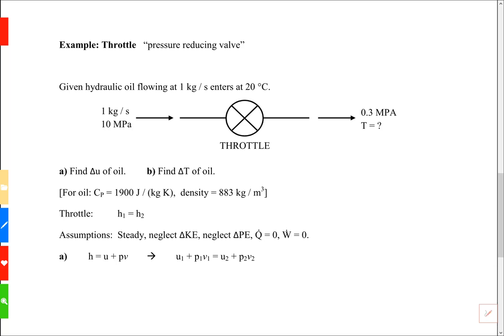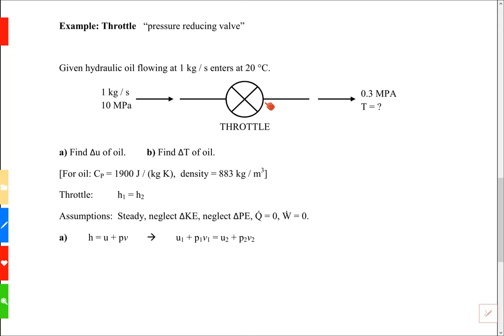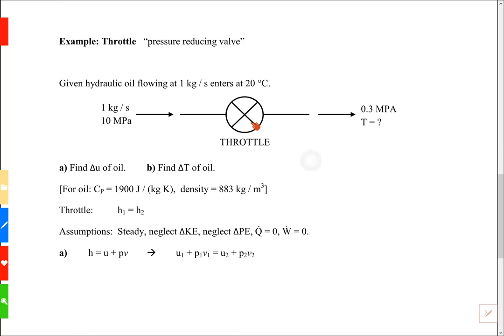Another name for a throttle is a pressure reducing valve. So in this schematic I've shown the throttle as a valve. We're given a certain mass flow rate of hydraulic oil and it enters at 20 C and enters at 10 MPa and downstream it's at a lower pressure 0.3 MPa so the pressure has gone down.